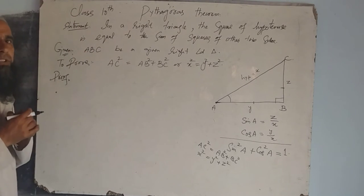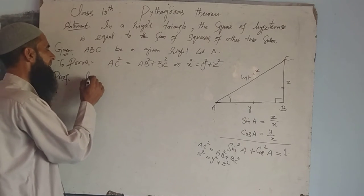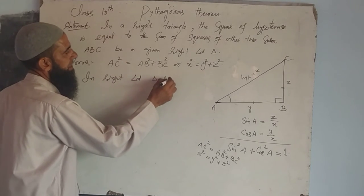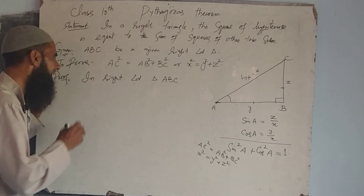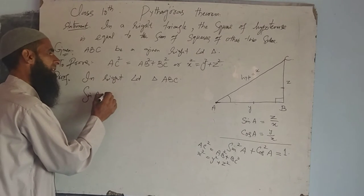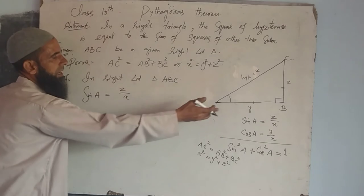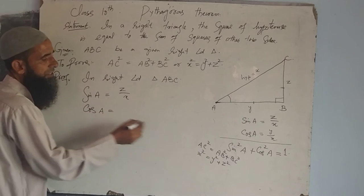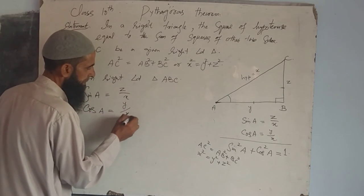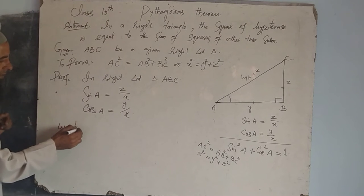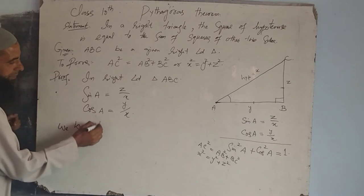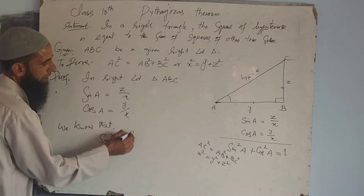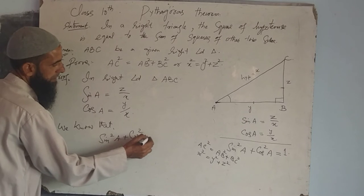Simple proof of this theorem. In right-angled triangle ABC, clearly sine of A equals Z by X. Cos of A equals Y by X. We know that sine squared A plus cos squared A is equal to 1.